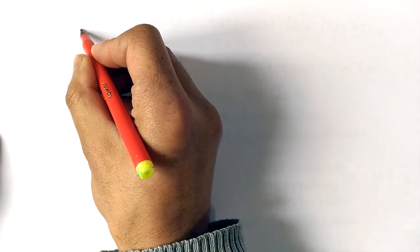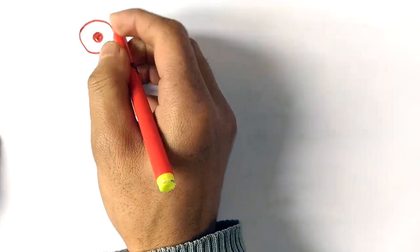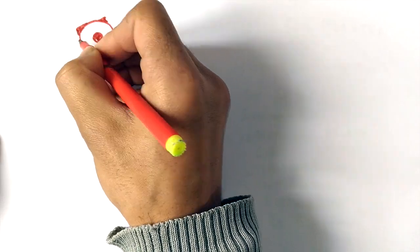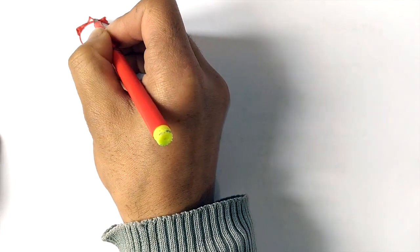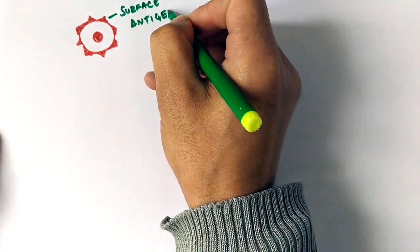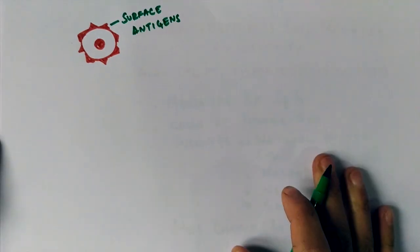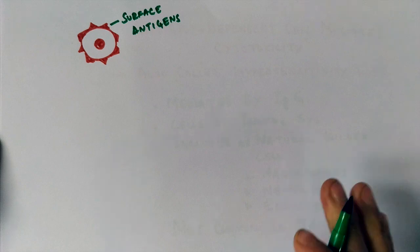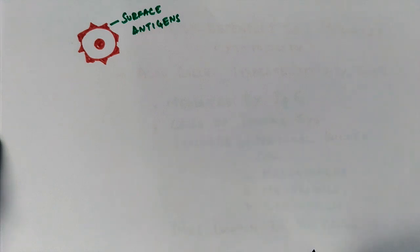Now let's see how it happens. Suppose we have a target cell here, drawn in red color. It has surface antigens, so this cell has to be eliminated by our immune system. Now we'll see how it hyperactivates our immune system - that's why we call it hypersensitivity.